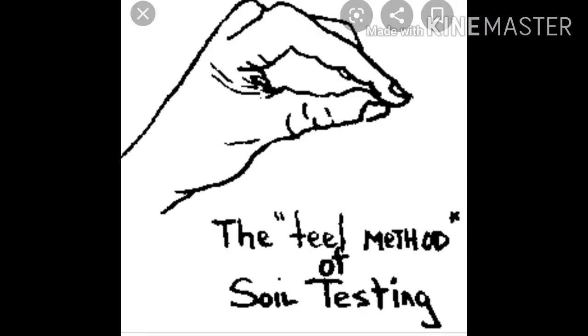Soil texture means you can feel and touch. In soil texture, we have some soil texture determination methods, including the feel method and the rule method. The feel method is a way of rubbing moist soil between the fingers and estimating the characteristic feel of the dominant soil separate in the soil. The word texture refers to the sensation when one rubs the material between two fingers.